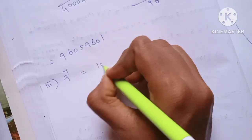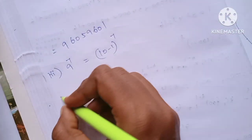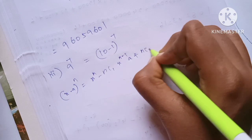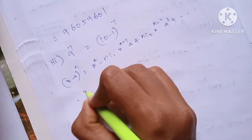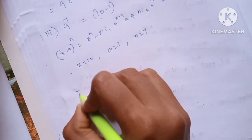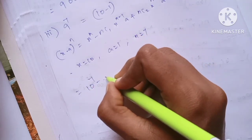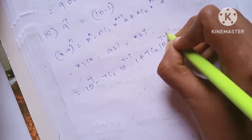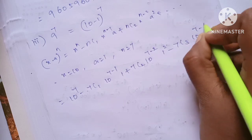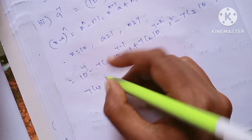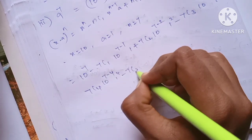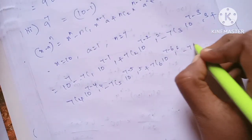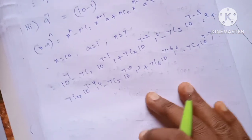Now for 9 to the power 7. This is 10 minus 1 whole power 7. This is x minus a whole power n. So x power n minus nC1 x power n-1, plus nC2 x power n-2 times a squared, and so on. Here a is 1, n is 7.